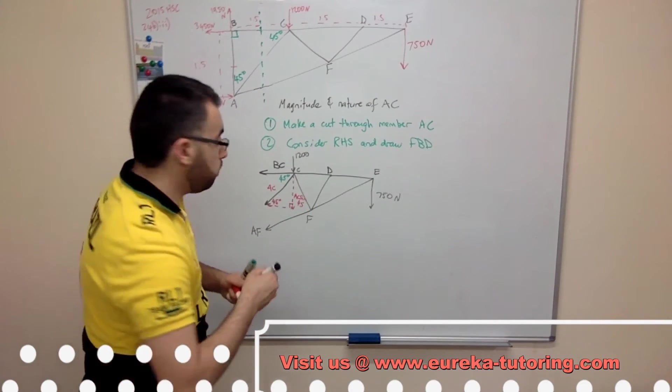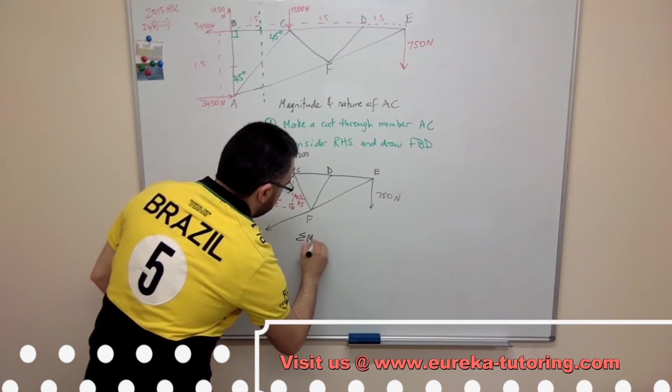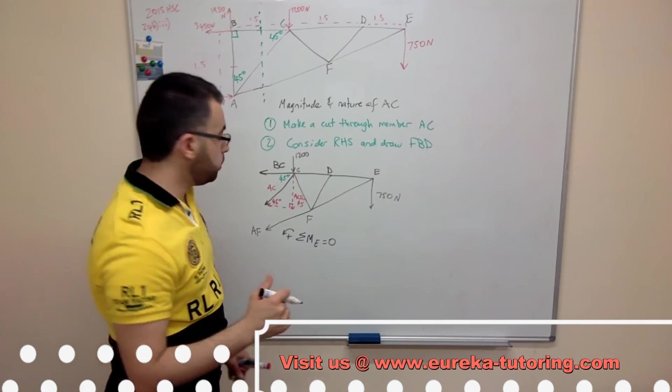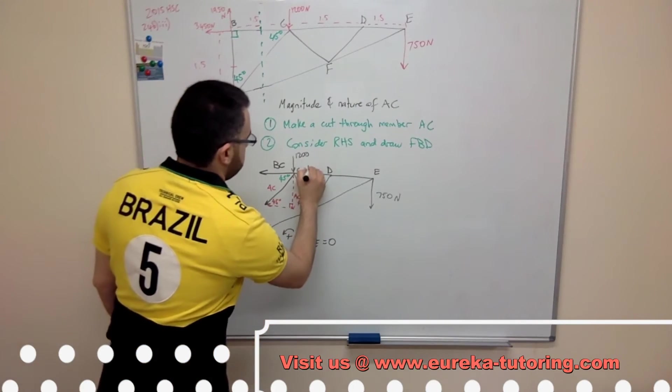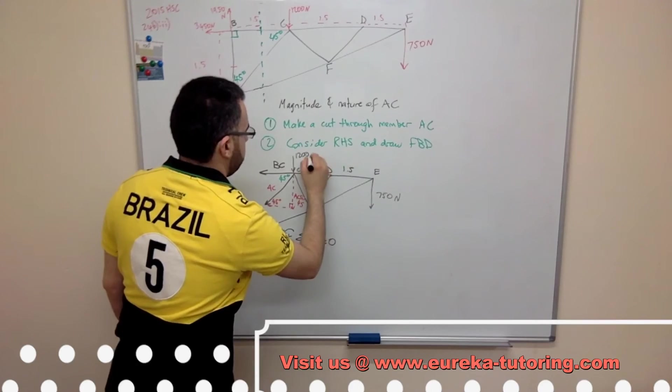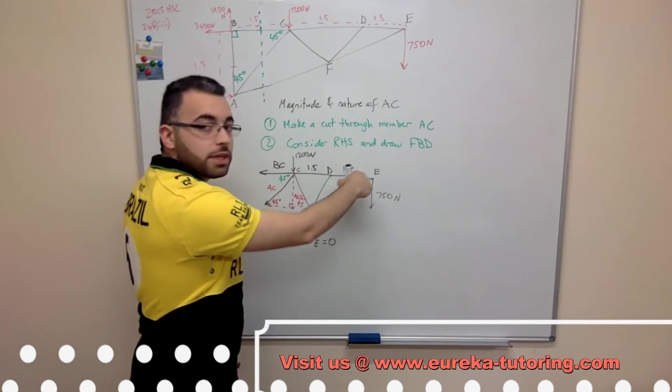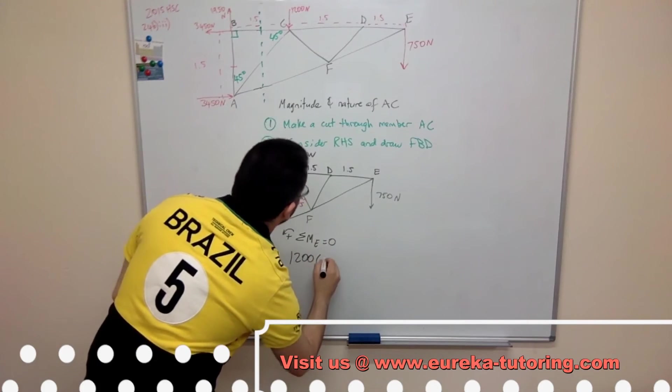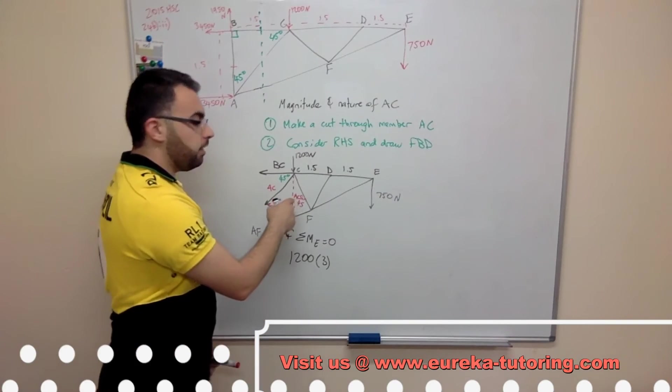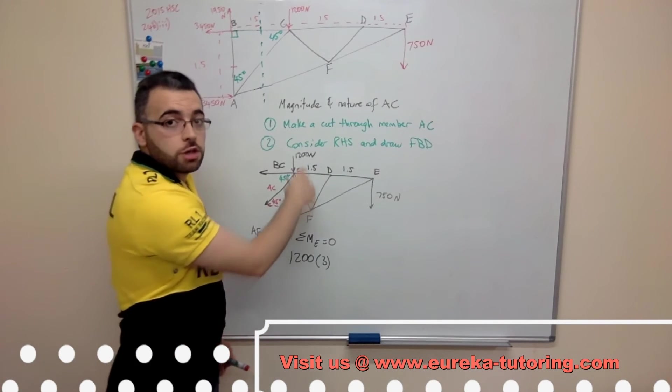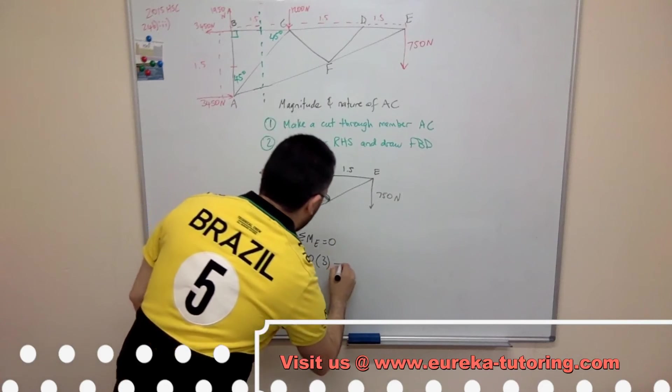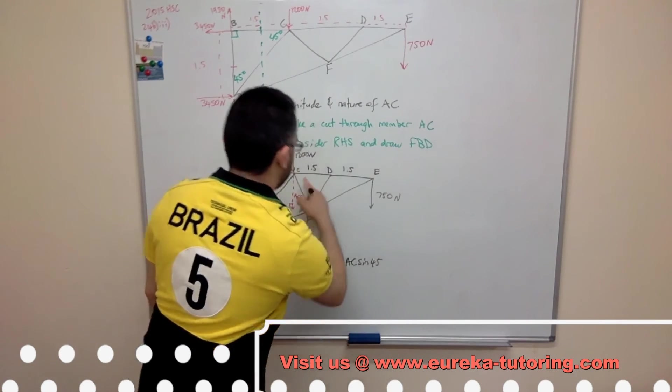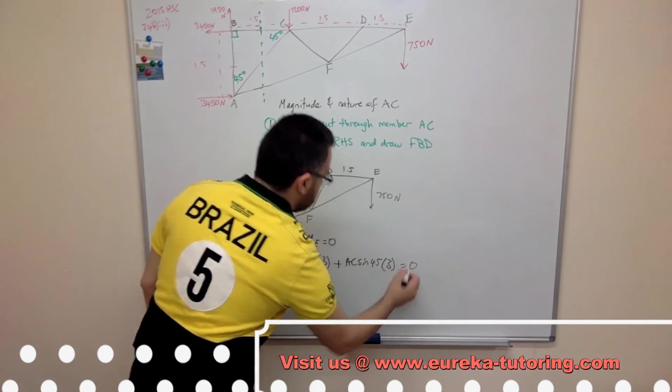So, the equation will be sum of moments about point E equals zero, and consider anti-clockwise to be my positive direction, my positive moment. I've got this force, 1200 units, times its perpendicular distance, which is 3. So, 1200 times 3, and then we have the vertical component of AC times its perpendicular distance, and that will be AC sine 45 times perpendicular distance, which is 3, equal to zero.